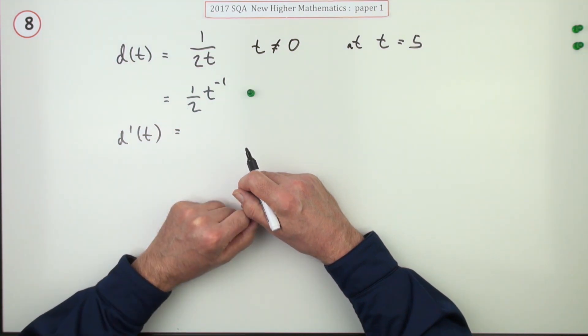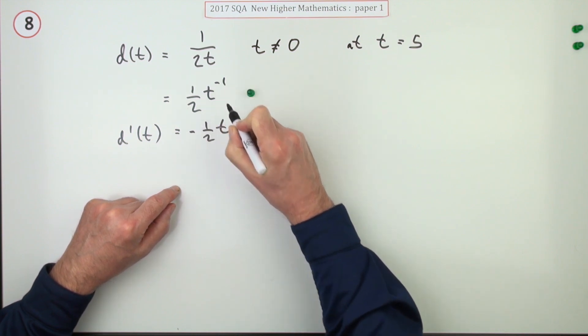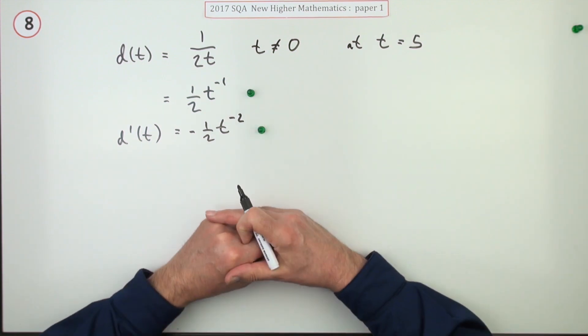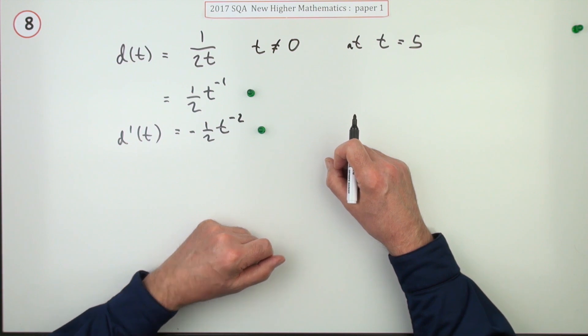Anyway, multiply by the power, so that's negative a half. Take one off the power, that's negative two. Doing that gets the second mark. The last part is evaluate it when t is five.